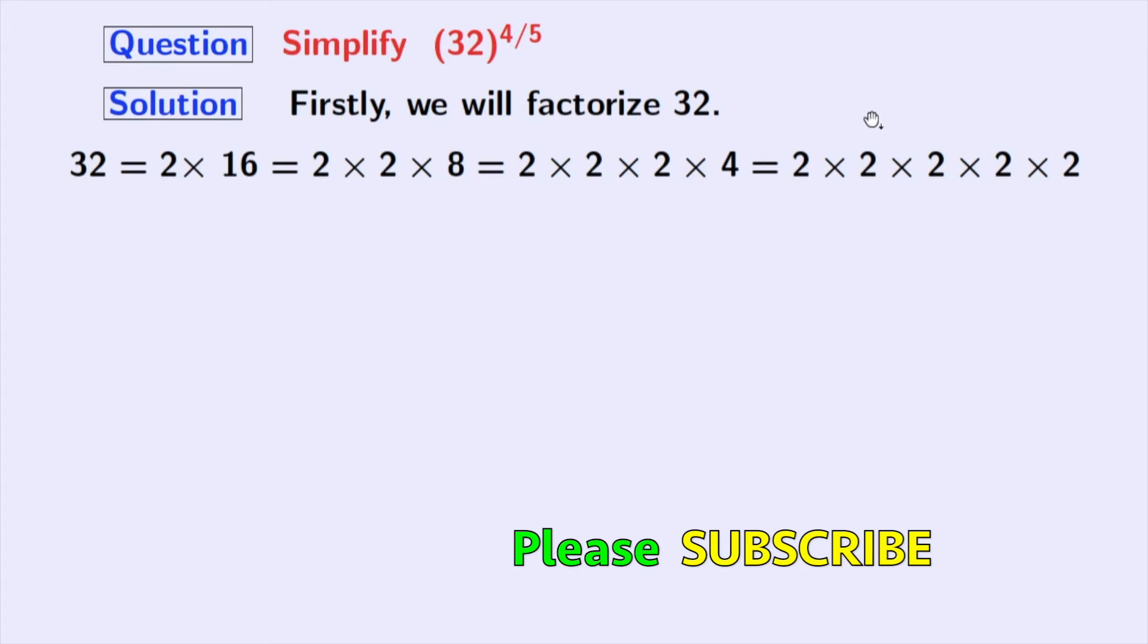Now look that all these factors are prime factors, so we cannot factorize further. As this is the product of 5 number of 2's, so we can express 32 as 2 power 5.